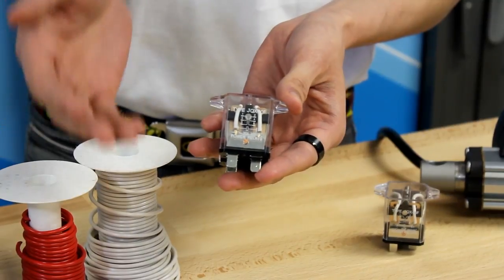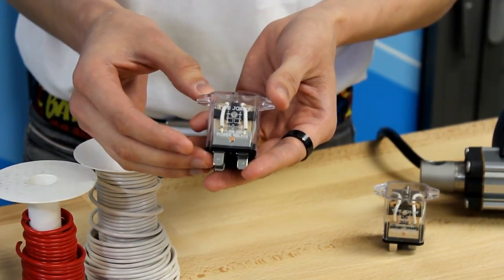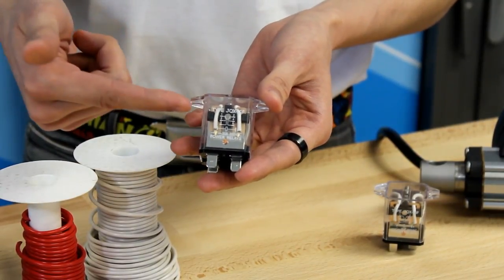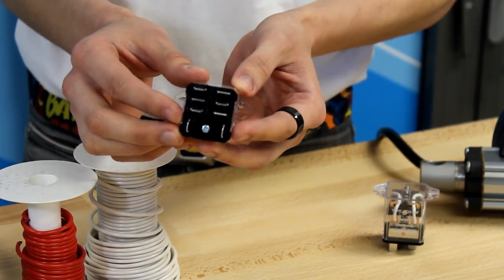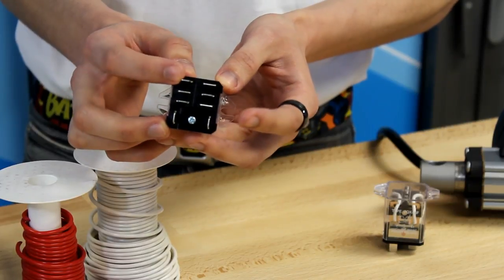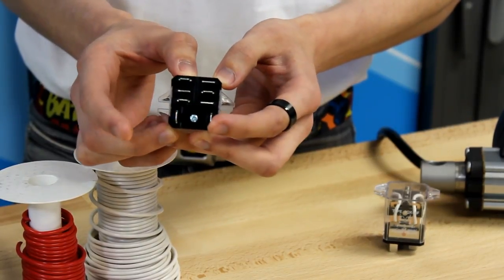Before we use the relay, we must first determine how it needs to be wired. Most relays have a wiring diagram printed on the case, as you can see here. These numbers correspond with the pins on the bottom, which are also labeled. As you can see, we only have pins 1, 4, 5, 7, and 8 available for connection.